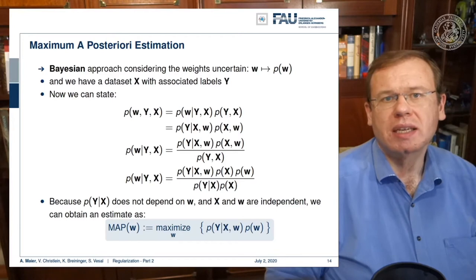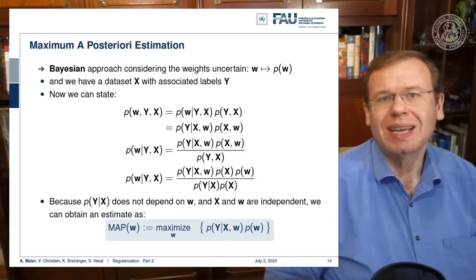We can rearrange this a bit further, and here you can see then that the probability p of x and the probability p of y given x pop up. By removing the terms that are independent of w, this yields a MAP estimate. We can actually seek to minimize the joint probability as maximization of the conditional probability p of y given x and w times the probability p of w.